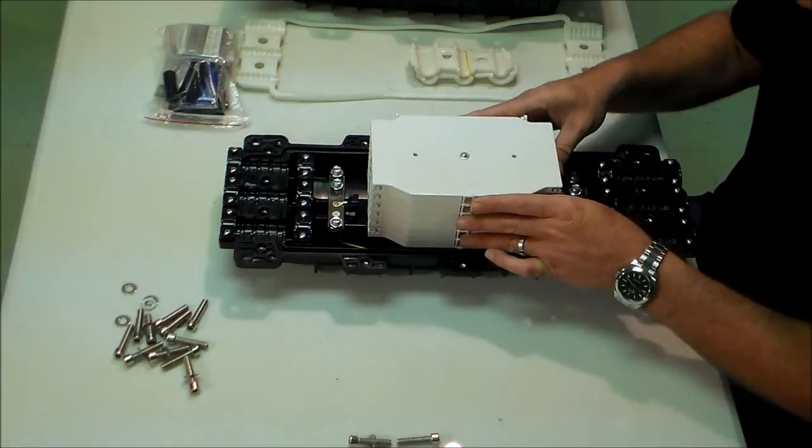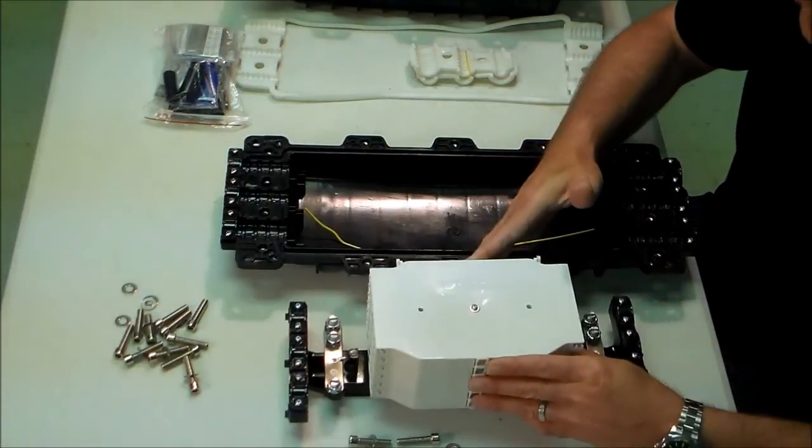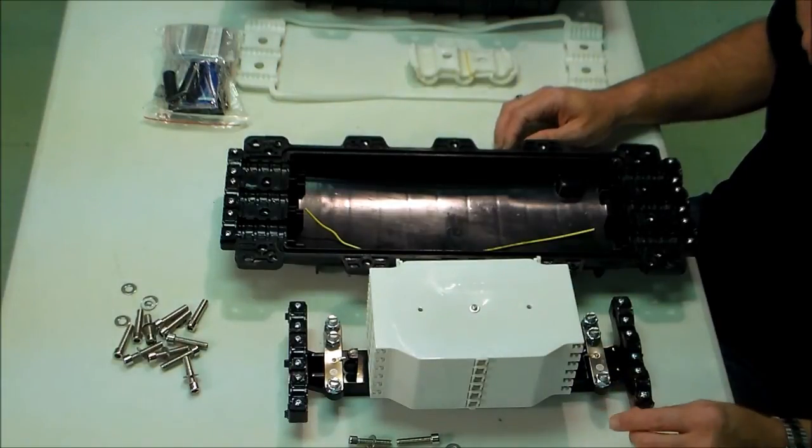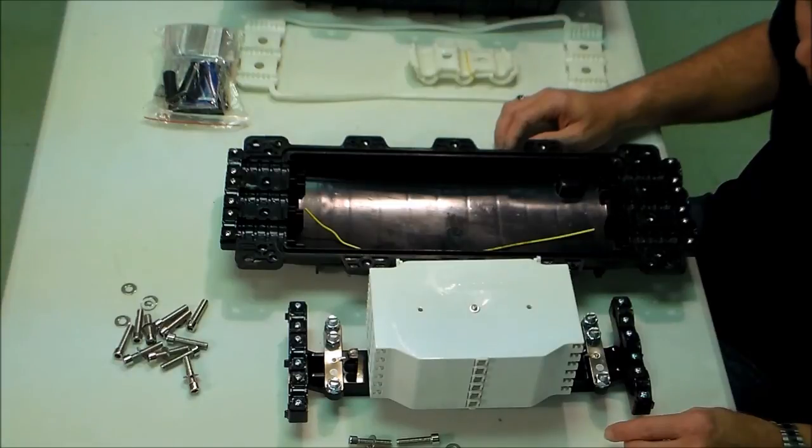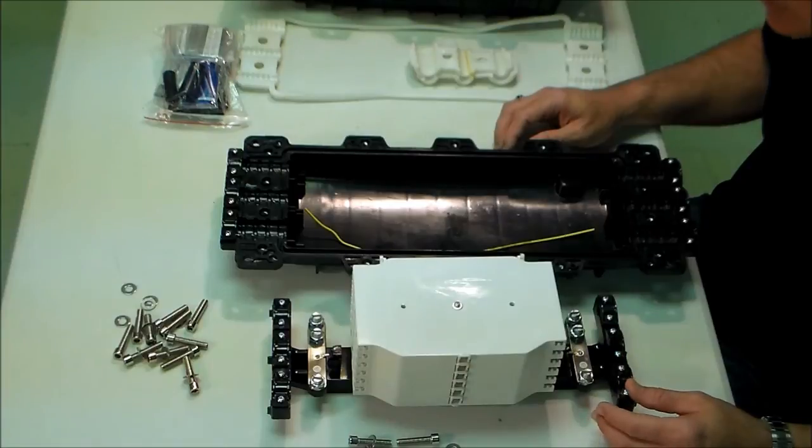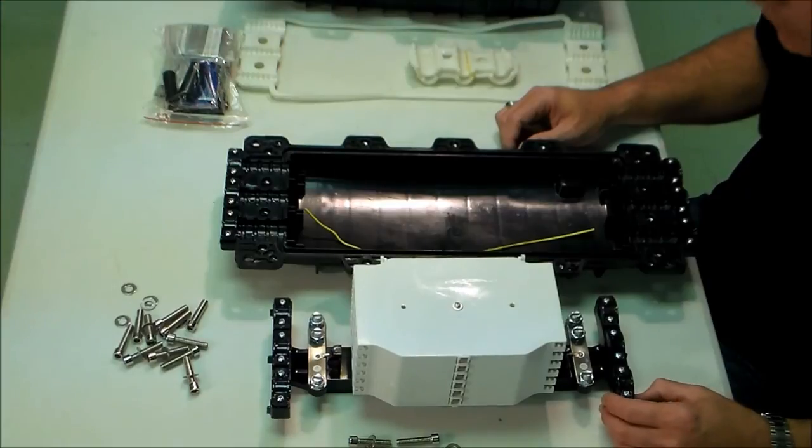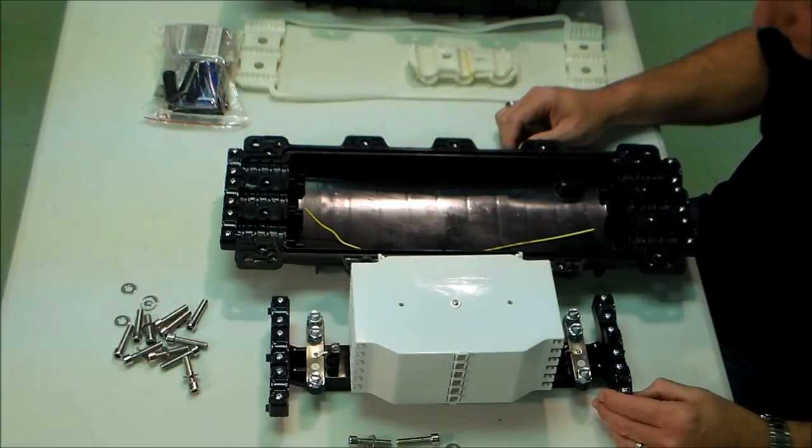The splice trays and the whole center section can be easily removed. That way, for all the splicing—which is going to take you some time—you'll be able to have plenty of room and working area to do your splices. And then when you're finished, you can put this entire sub-assembly back into the main assembly housing. Also included are the ground wiring straps and all necessary hardware.